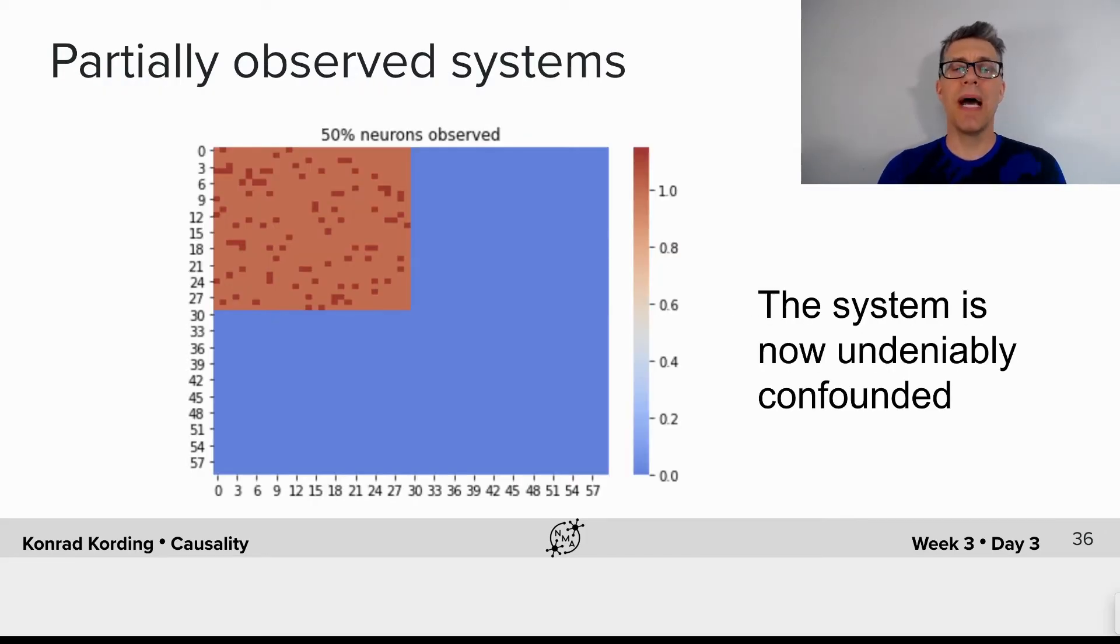But what about partially observed systems? In neuroscience we almost always only record a tiny subset of the neurons that is there. Or alternatively, if we are in the fMRI world, we record a low dimensional projection of the signals that is there. In those cases we have partially observed systems and the system might act differently.